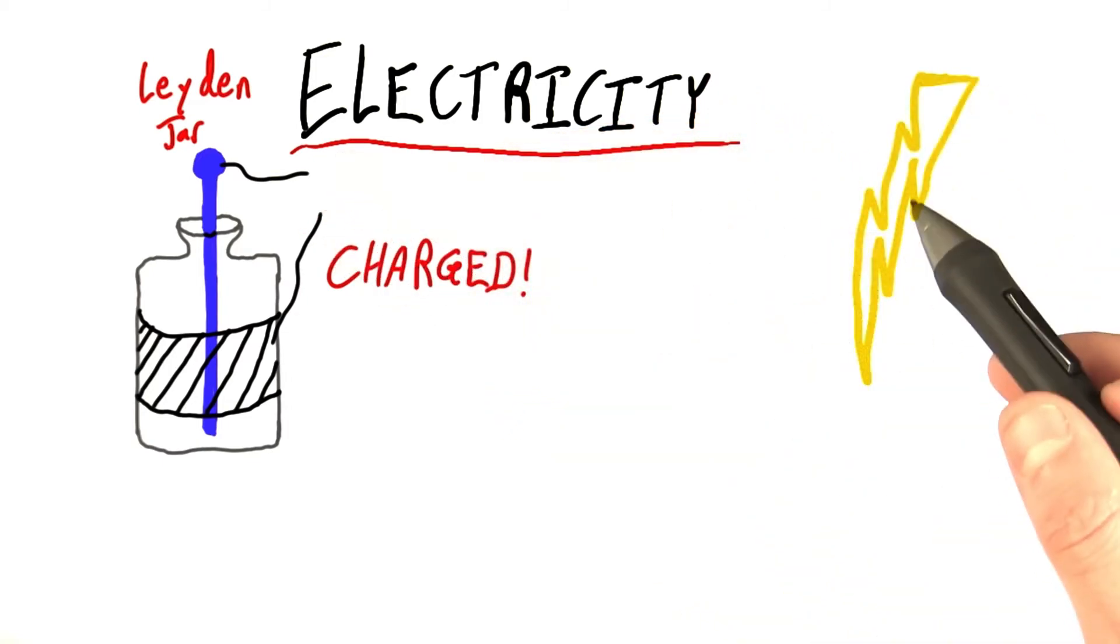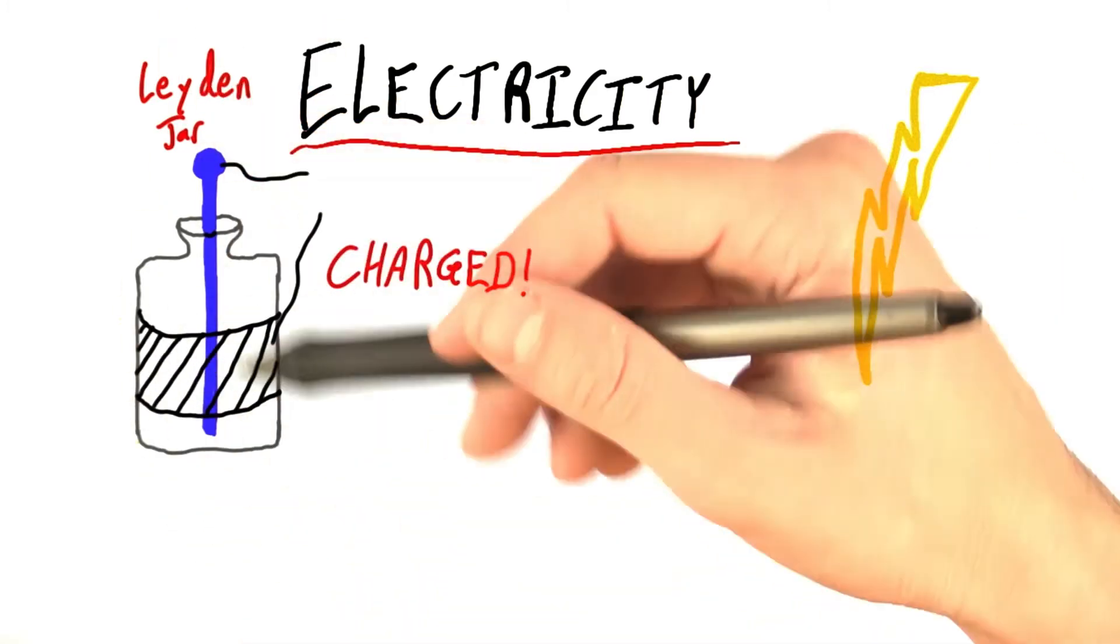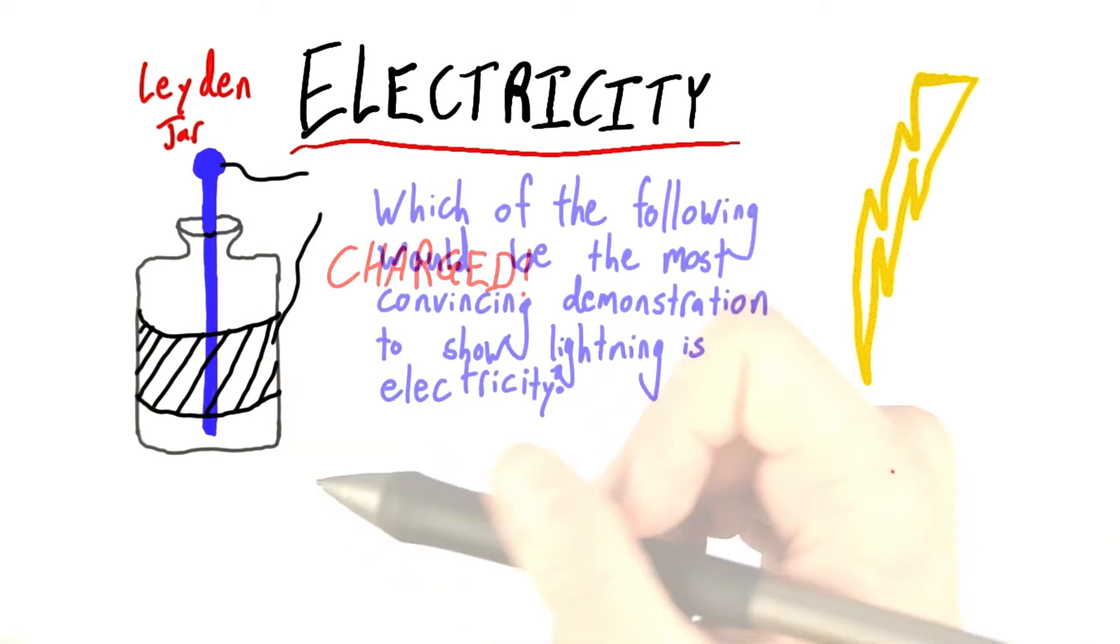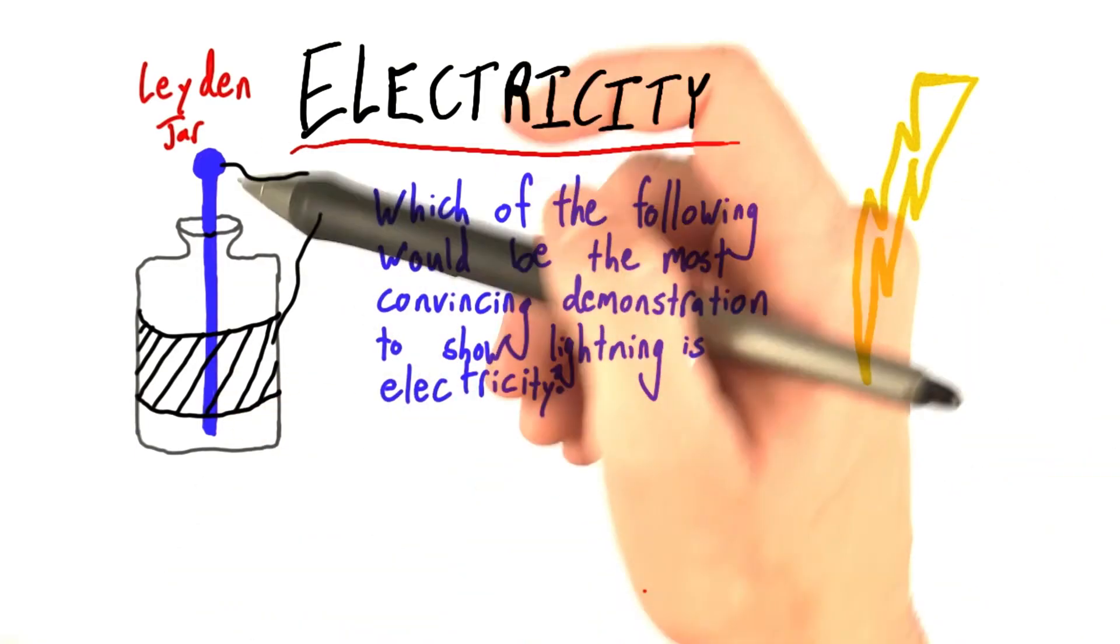Now remember, Benjamin Franklin's idea was that lightning is somehow the same thing as the electricity that scientists have been playing around with in these Leiden jars. So my question is: which of the following options would be the most convincing demonstration to show that lightning is actually the same thing as the electricity in these Leiden jars?